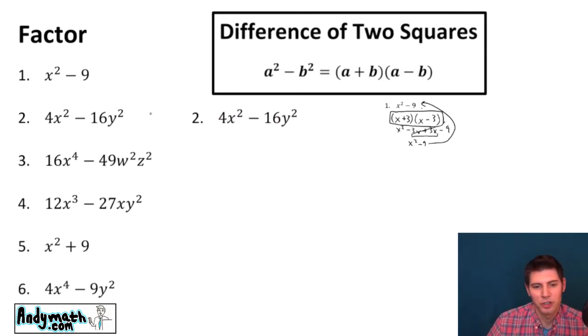All right number two. Four x squared minus 16 y squared. So yes, even though this is a section on difference of two squares we always want to factor out a GCF if possible before we start. And here both four and 16 are divisible by four. So I'm going to pull a four out for my first step. So four times x squared minus four y squared. So that was just factoring out the GCF.